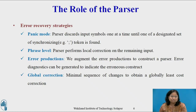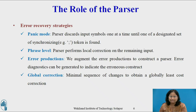Third, error production: we augment the grammar for the language with error productions to construct a parser. If an error production is used by the parser, an error diagnostic can be generated to indicate the erroneous construct in the input. Fourth, global correction: we would like a compiler to make as few changes as possible when processing an incorrect input string. There are algorithms for choosing a minimal sequence of changes to obtain a globally least-cost correction. Given an incorrect input string x and grammar g, these algorithms find a parse for a related string y such that the number of insertions, deletions, and changes of tokens required to transform x into y is as small as possible.